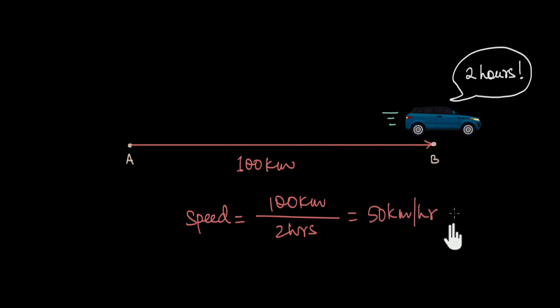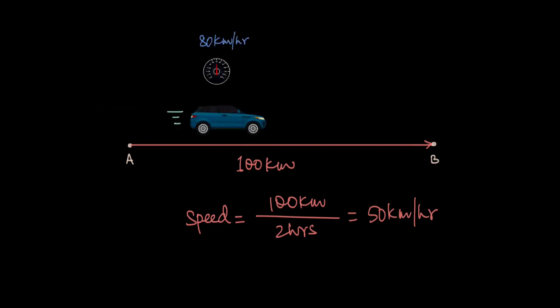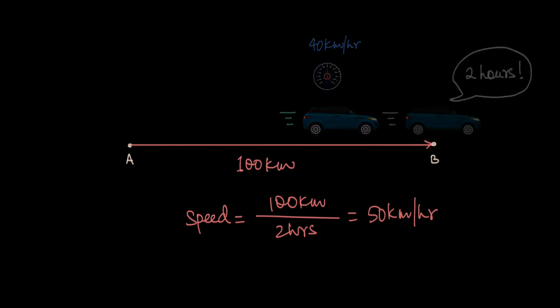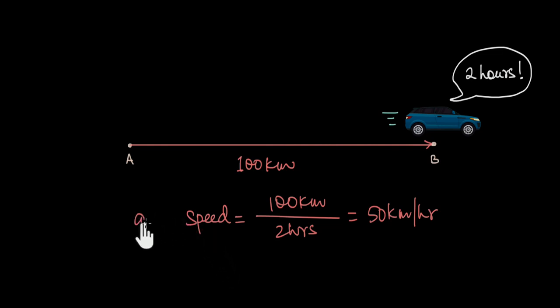But were you moving at this speed throughout your journey? Of course not. When you drive, sometimes you drive fast and at other times you drive slow. So this speed we calculated is the average of all the speeds you were moving — this is called the average speed.